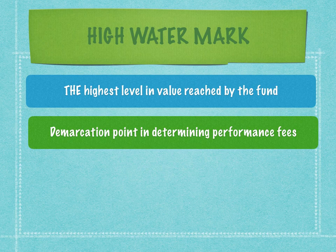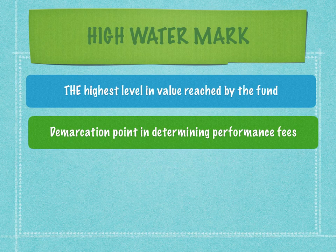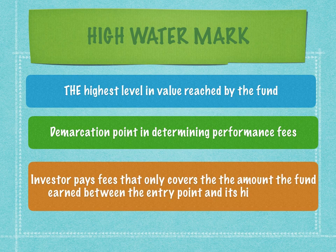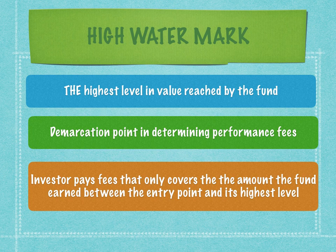In our example, we took a very extreme case of a 100% return. What happens in the next year if there is only a 10% return? The fund manager will not get performance fees in a year of underperformance because the high watermark has not yet been touched. So the high watermark is the demarcation point in determining performance fees, and the investor pays fees that only covers the amount the fund has earned between the entry point and the highest level.